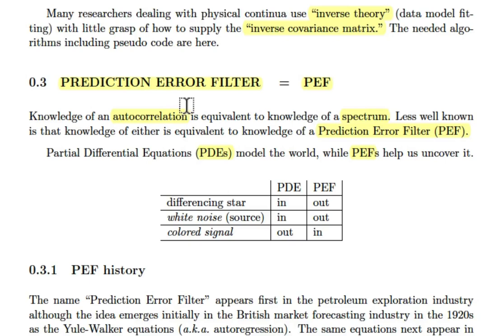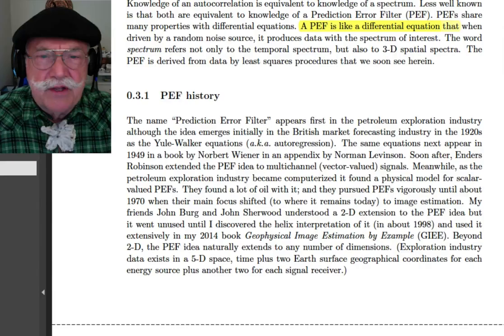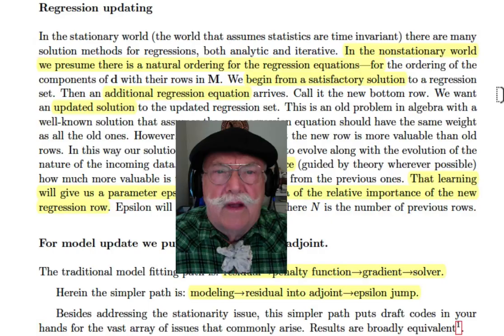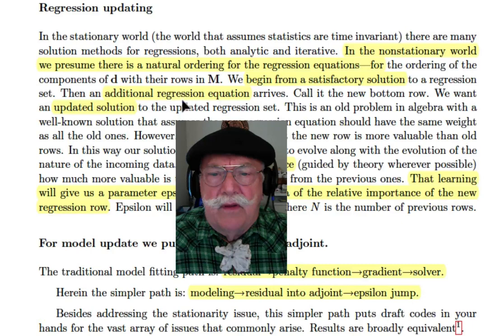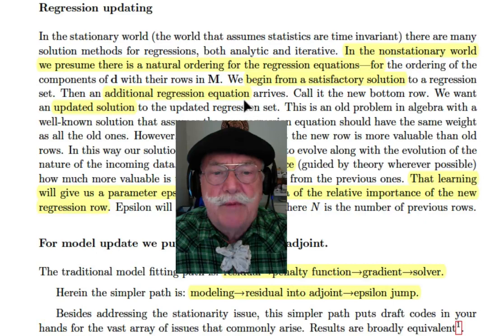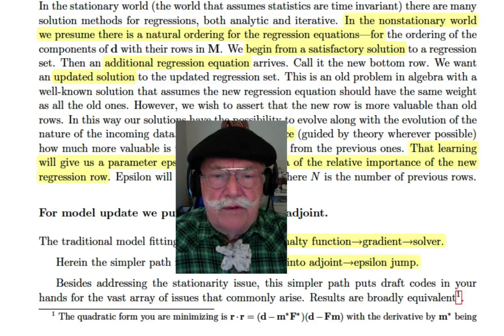Our main tool is going to be the prediction error filter. Prediction error filters resemble partial differential equations, but as you can see from the table, they are kind of the opposite. It's going to be the heart of our ability to deal with this conflict between Fourier space and physical space. In the non-stationary world, we presume that there is a natural ordering of the regression equations. We begin from a satisfactory solution, and then a new regression equation arrives. We'll maybe put that at the bottom of the stack of regression equations.